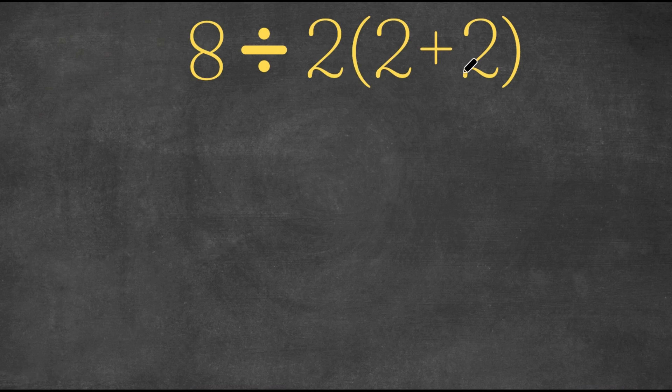So the first step here is to add the numbers in the parentheses. And this is what everyone agreed on. Everyone agreed that this was the first step. So we have 2 plus 2, and as we all know, that's 4.